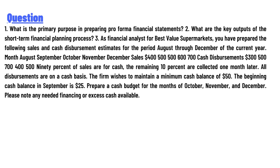The data is as follows — Month: August, September, October, November, December. Sales: $400, $500, $500, $600, $700. Cash disbursements: $300, $500, $700, $400, $500. Note that 90 percent of sales are collected in cash, and the remaining 10 percent are collected one month later.